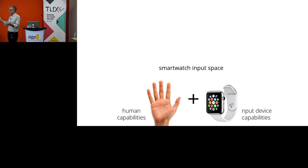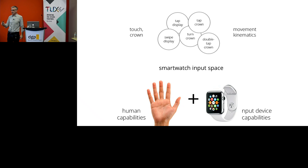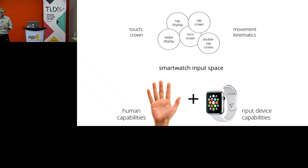The final main project I'm going to talk about is in the smartwatch space, which is another very hot space right now. When you think about using a smartwatch, there's a pretty limited set of things you can do: touch the screen, twist or push the crown, and there are different kinds of movement kinematics — gestures, accelerometer data, and finger swipes. It's a reasonable vocabulary, but we wondered how we could push this further.